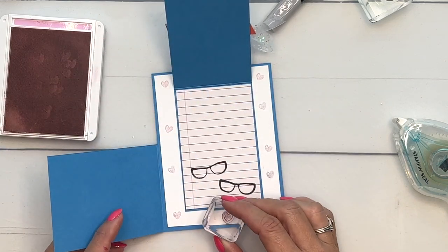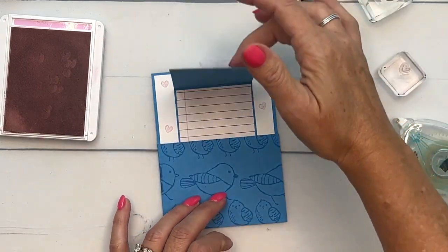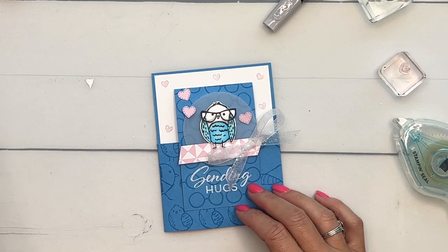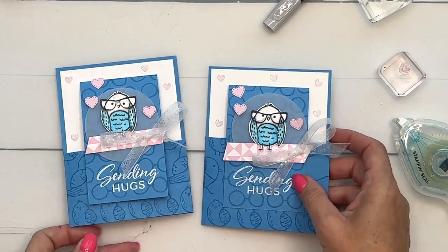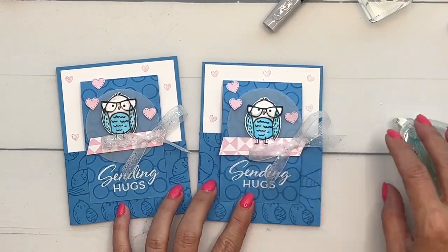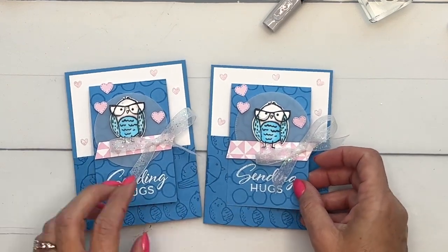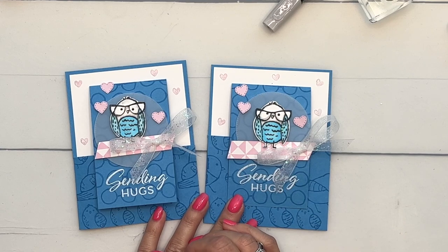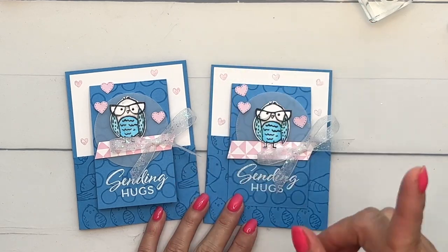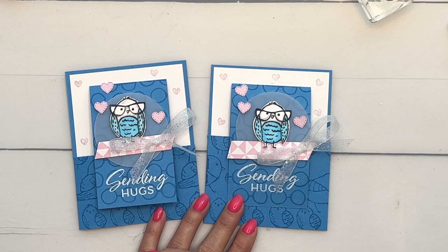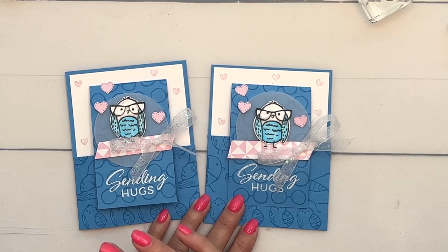There you have it, a fun double Dutch fold fancy fold card. Make sure you click the link here on YouTube, hop back over to my blog, and grab the free PDF that has the measurements and supplies. Check out the other two projects I have using the adorable Bird's Eye View stamp. Thanks for joining me, bye-bye.